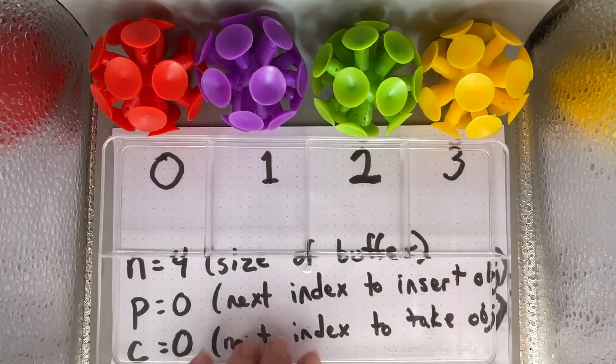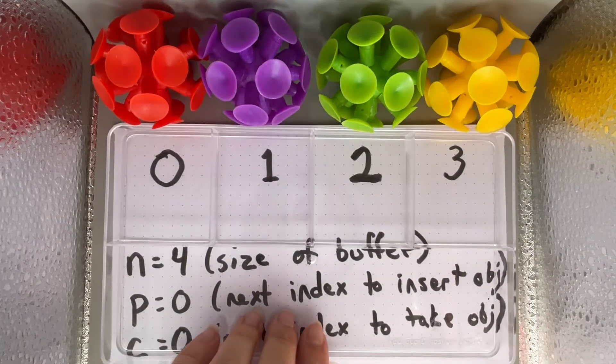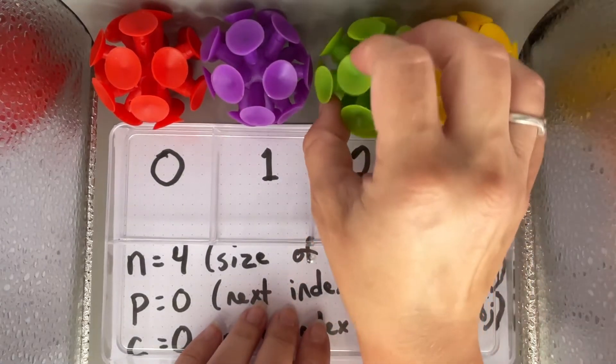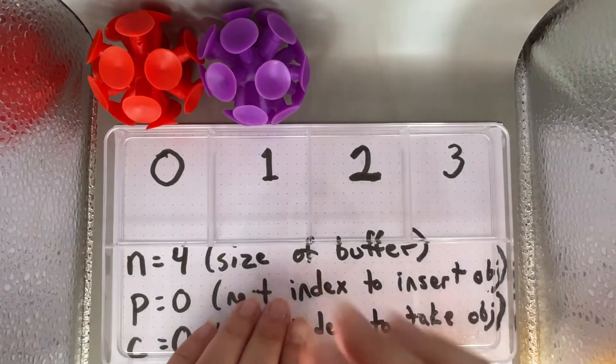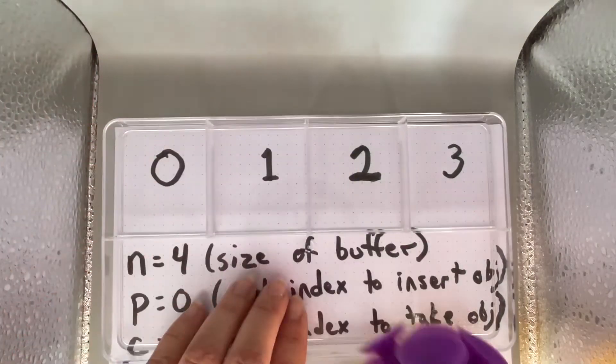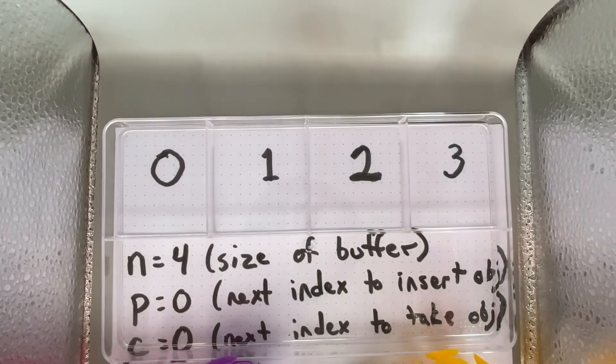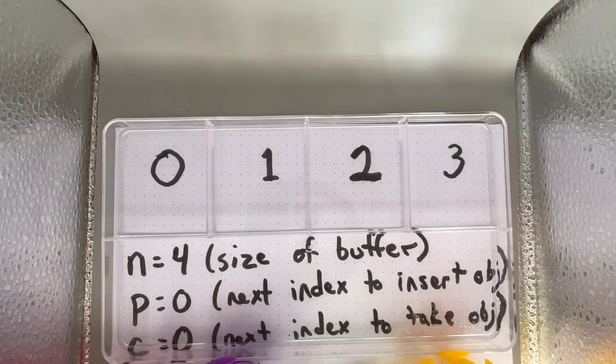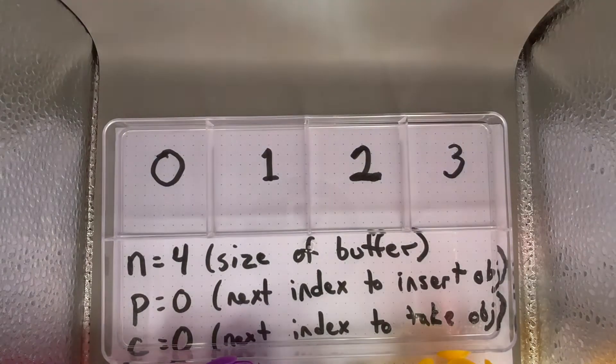Those are the only variables we're worried about today. We have a total of four objects which we may end up using at any given point in time, and we've made them all four different colors so they're easier to tell apart.